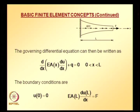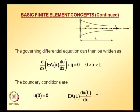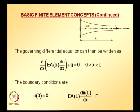One boundary condition is essential and the other is natural. From the rule: for a boundary value problem of order 2p, boundary conditions of order 0 to p-1 are essential, and those of order p to 2p-1 are natural. The condition u = 0 at x = 0 is essential — without it, there is no bar problem. The point load at the right tip is natural, because even if no force F is applied, a bar still exists.